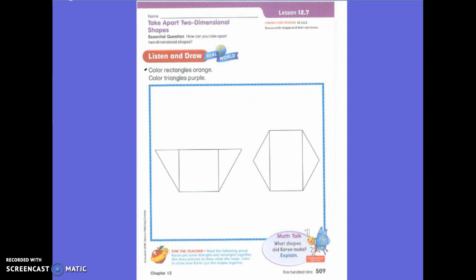So we should have colored this. And then the next direction says color triangles purple. So go ahead and do that. Please make sure you have wonderful coloring inside the line. How do we know which shapes are triangles?